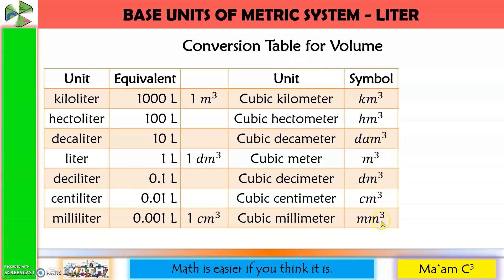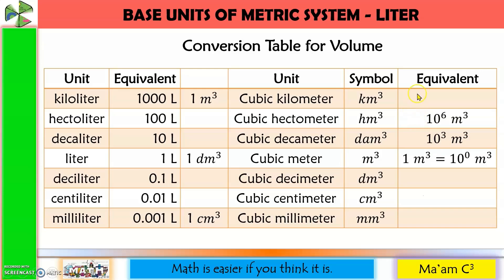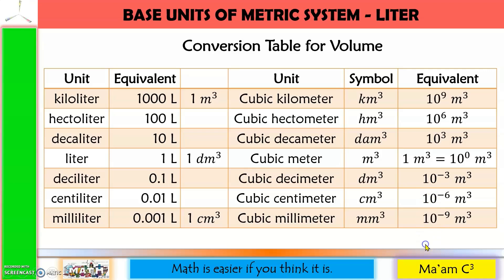The units and their corresponding symbols follow cubic notation, so the exponent is 3. From the base unit (10⁰ = 1 cubic meter) going up: 10³, 10⁶, 10⁹. Going down from the base unit: 10⁻³, 10⁻⁶, 10⁻⁹. Each successive step going up or down changes the exponent by 3 because the units are cubic.